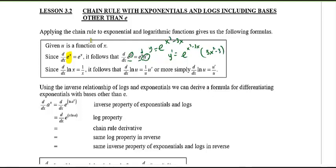Similarly, for the natural log of x, the derivative is 1 over x. It follows that if I replace x with u, it becomes 1 over u, and then that extra hook-on factor of u prime. Don't forget that. Of course, you can simplify that to just be u prime over u.